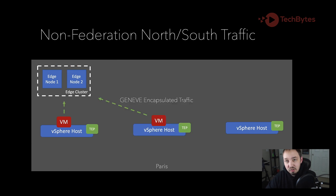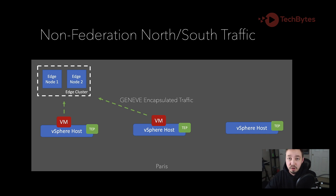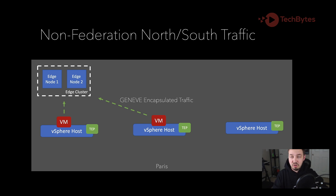What about non-federation north-south traffic? Again, not doing any federation — this is one location. In a nutshell, if you're on an overlay segment in NSX, all traffic will go to your edge nodes and then out to the internet or wherever they're trying to go. That's pretty much a universal rule if you're on an overlay network. Now, if you're on a VLAN-backed segment, none of this applies — you would be using the default physical gateway, wherever that is on your network. So none of this applies for VLAN-backed segments.